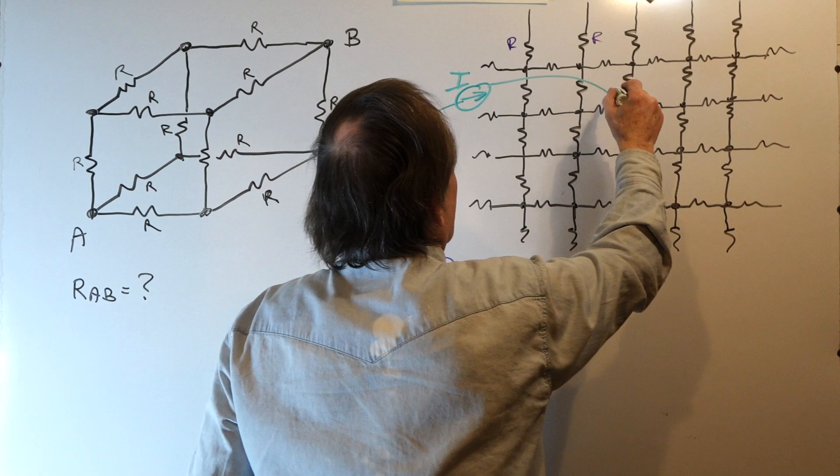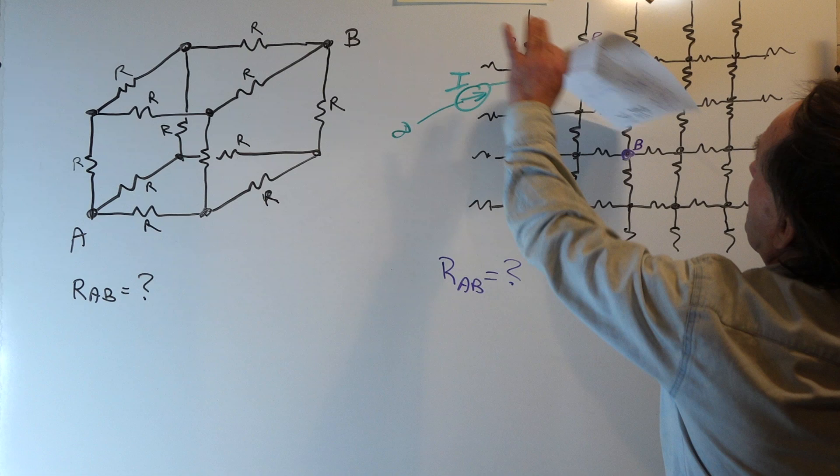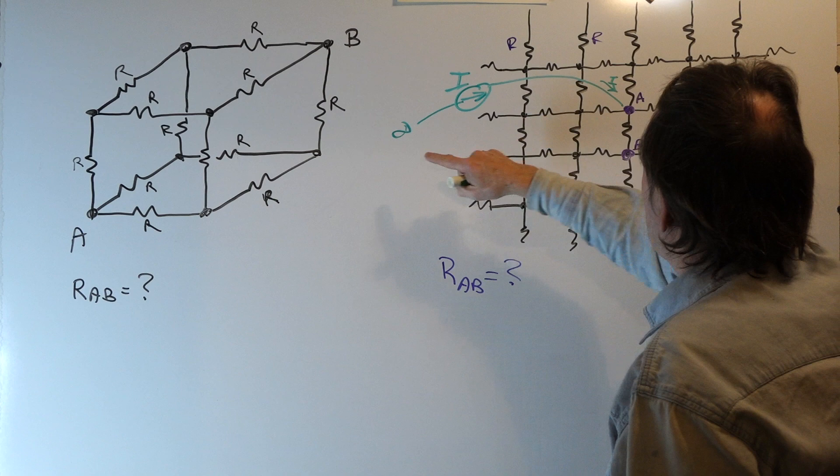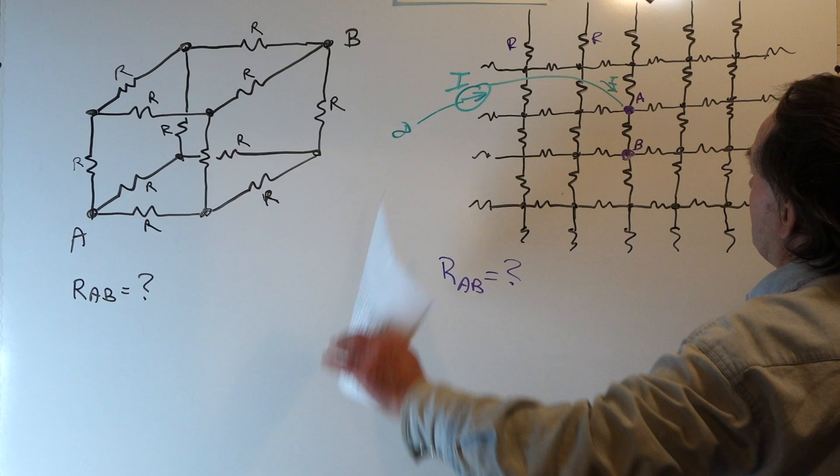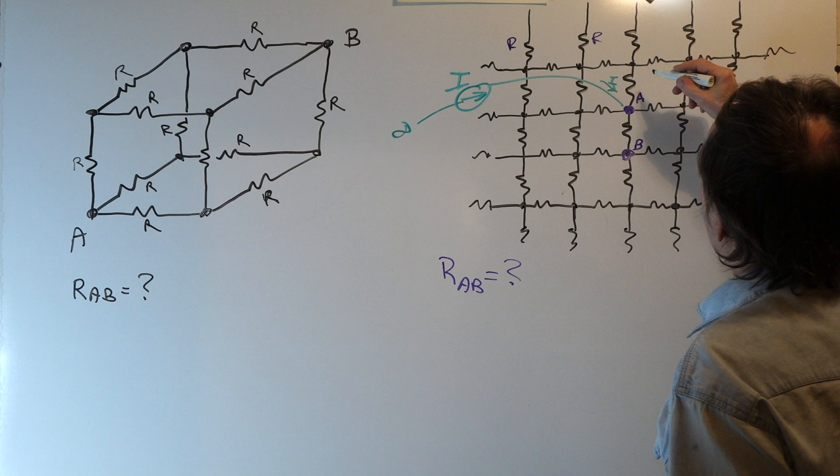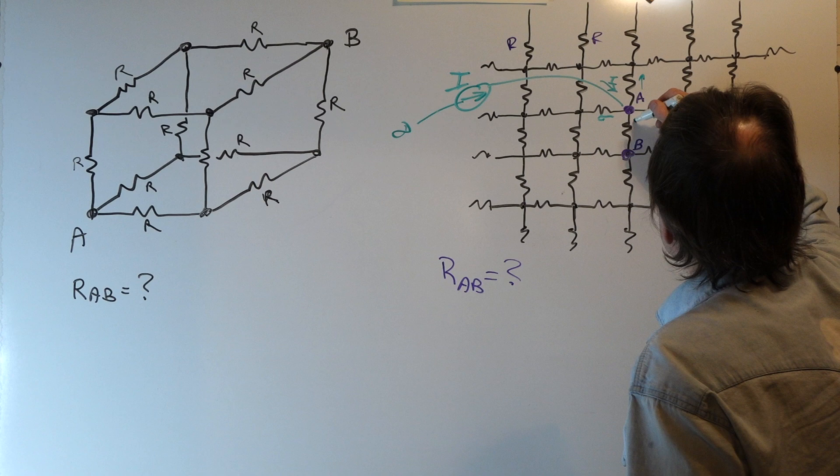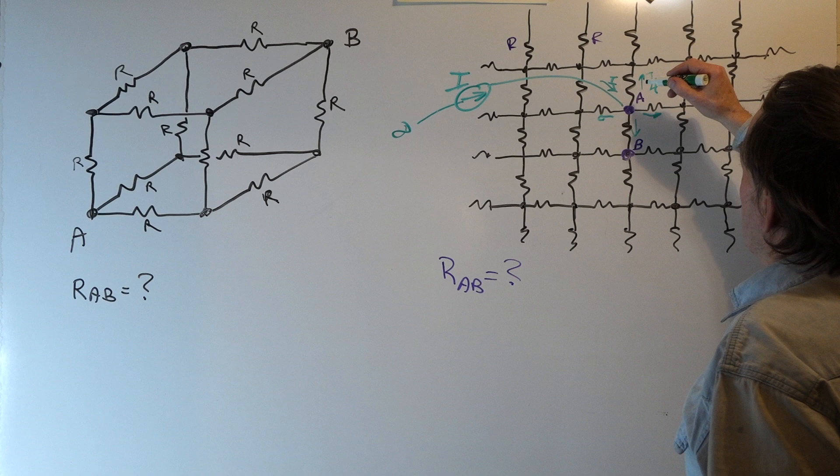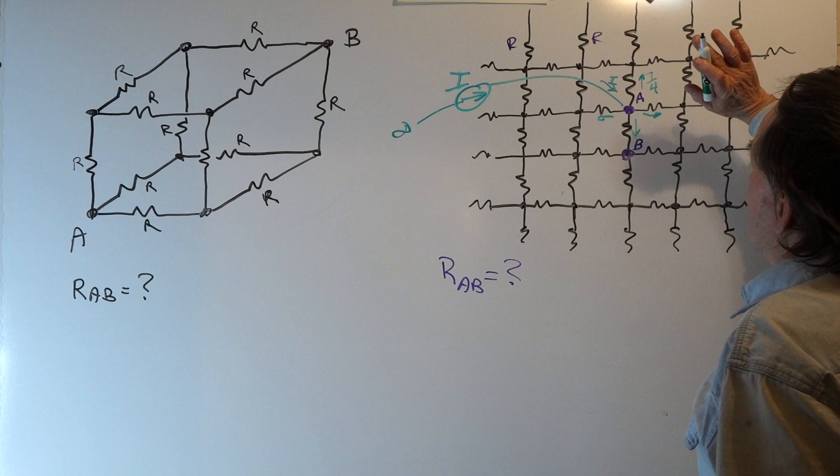It's flowing into node A. It's going to split and go off to infinity and come back to the current source. All the currents are going to combine back to give us I flowing into the current source. So we have this loop: the current source into A, the current splitting, going out to infinity, and then coming back. Well, because of the symmetry of this problem, this current I has to split equally four ways. So in each one of these resistors, the current has to be I over four.